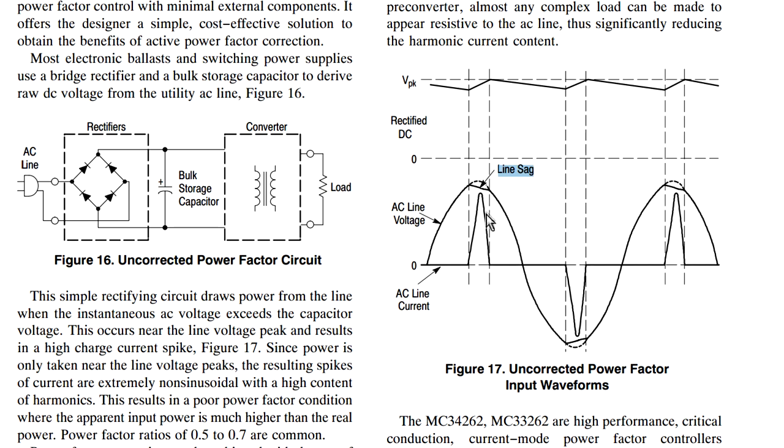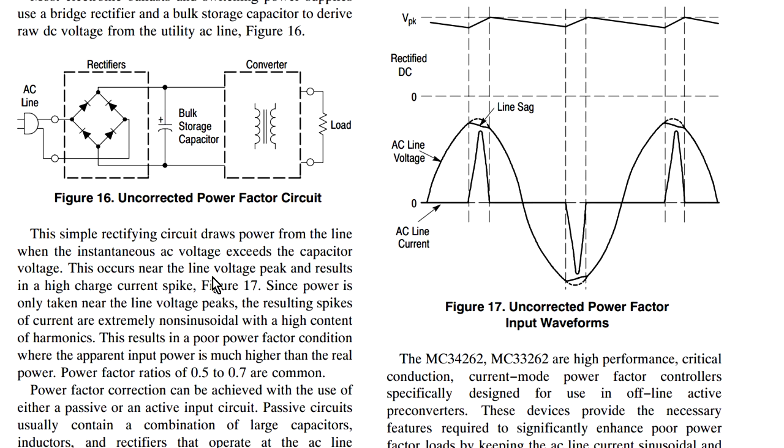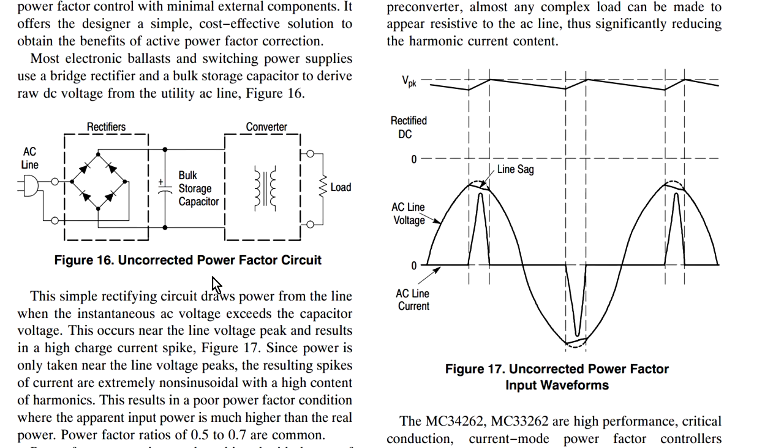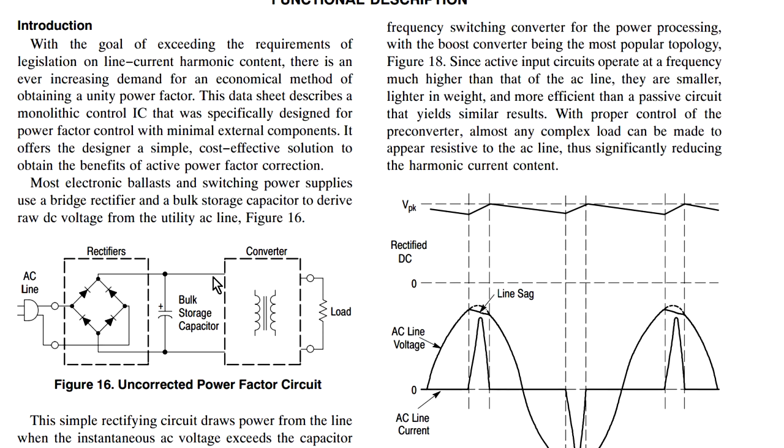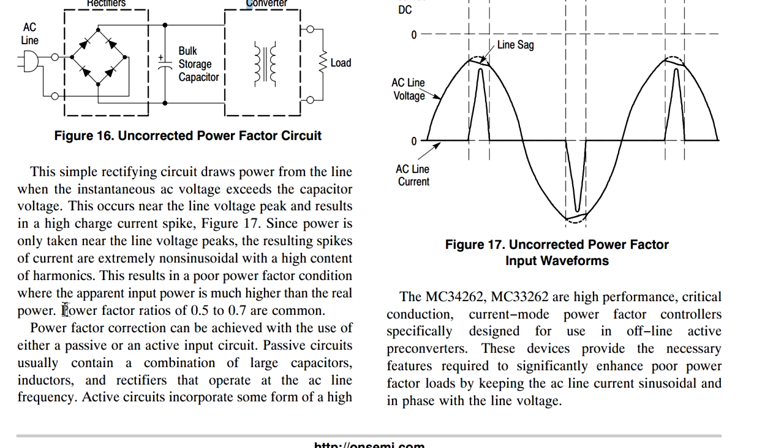You're going to get these current pulses at the positive and negative peaks of the mains input. That's not very good at all for getting a power factor correction of one. In fact, they tell you here that this configuration can commonly give you a power factor ratio of 0.5 to 0.7, and that's not great at all.